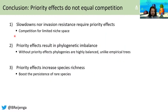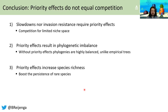In summary, slowdowns and invasion resistance do not actually require priority effects to be explained — rather it is competition for limited niche space in general which explains these patterns. This also means that these patterns cannot be used as evidence for priority effects or any of these local dynamics. Secondly, priority effects result in phylogenetic imbalance, and if priority effects are not taken into account, phylogenetic trees would be very balanced under competition, which is unlike empirical trees. And lastly, priority effects counterintuitively increase species richness by boosting the persistence of rare species. In conclusion, priority effects do not equal competition, and these patterns cannot be used as conclusive evidence for their presence or absence.